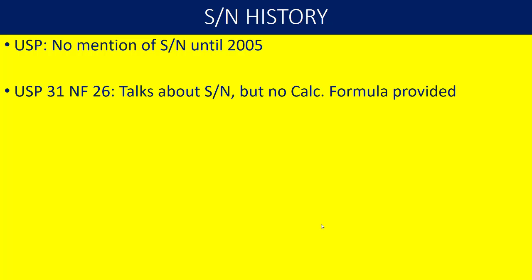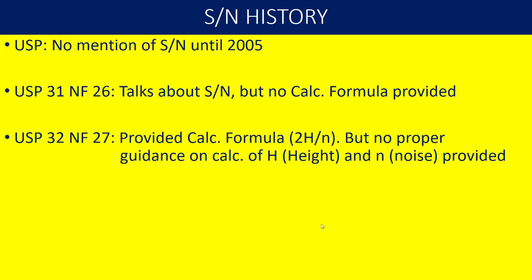USP started speaking about signal-to-noise ratio from USP 31 NF26. But USP did not give the calculation formula for the signal-to-noise ratio, and it has appeared into USP 32.